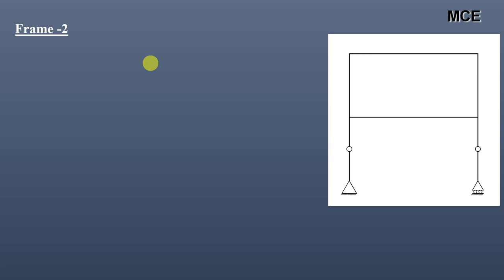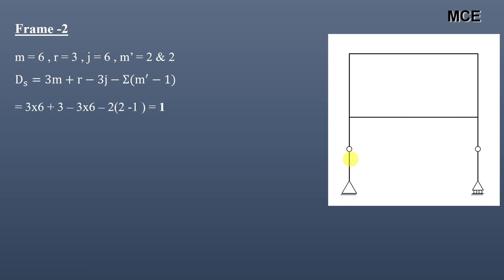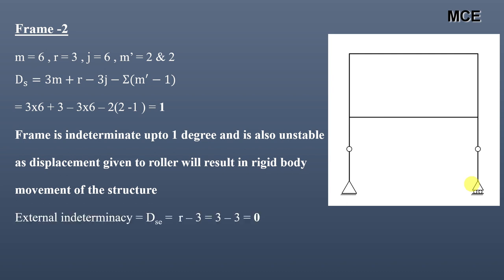For Frame 2, we can see it has 6 members, 3 reactions, 6 joints, and 2 internal hinges. The number of members meeting at both internal hinges are 2, so m′ = 2 and 2. The value of ds = 1, so the frame is indeterminate to one degree. However, this frame is also unstable — giving a displacement to the roller results in rigid body movement of the structure. External indeterminacy = 3 − 3 = 0. Internal indeterminacy = 1 − 0 = 1.